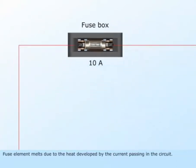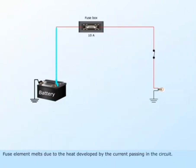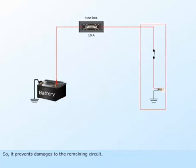Fuse element melts due to the heat developed by the current passing in the circuit. So it prevents damages to the remaining circuit.